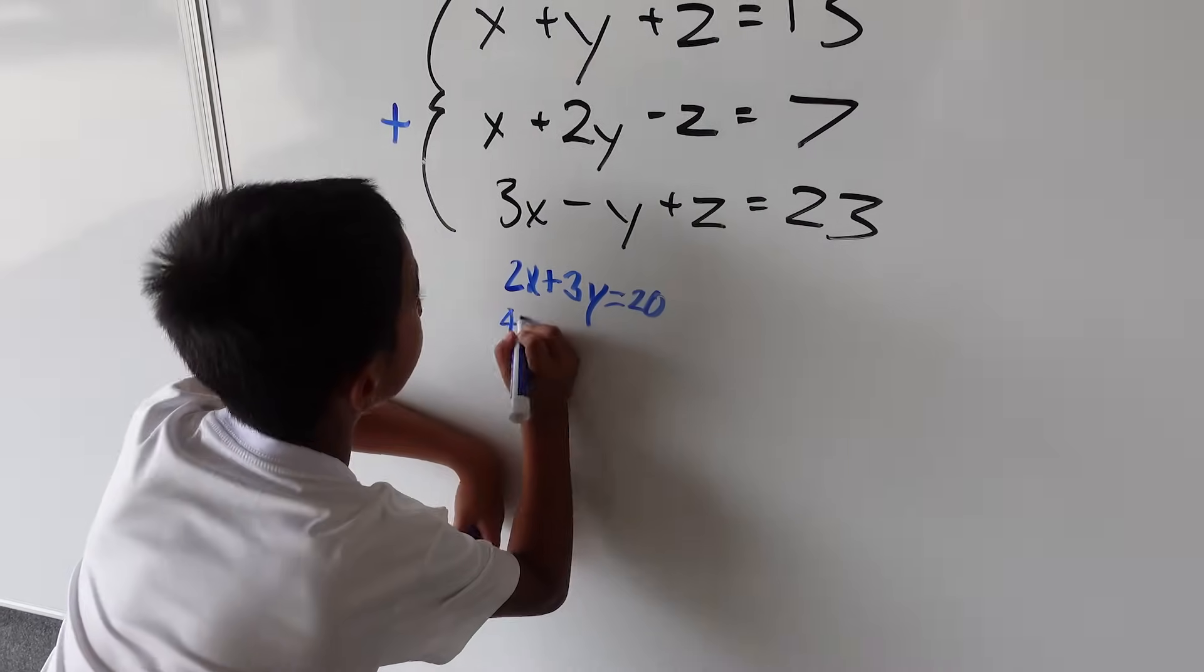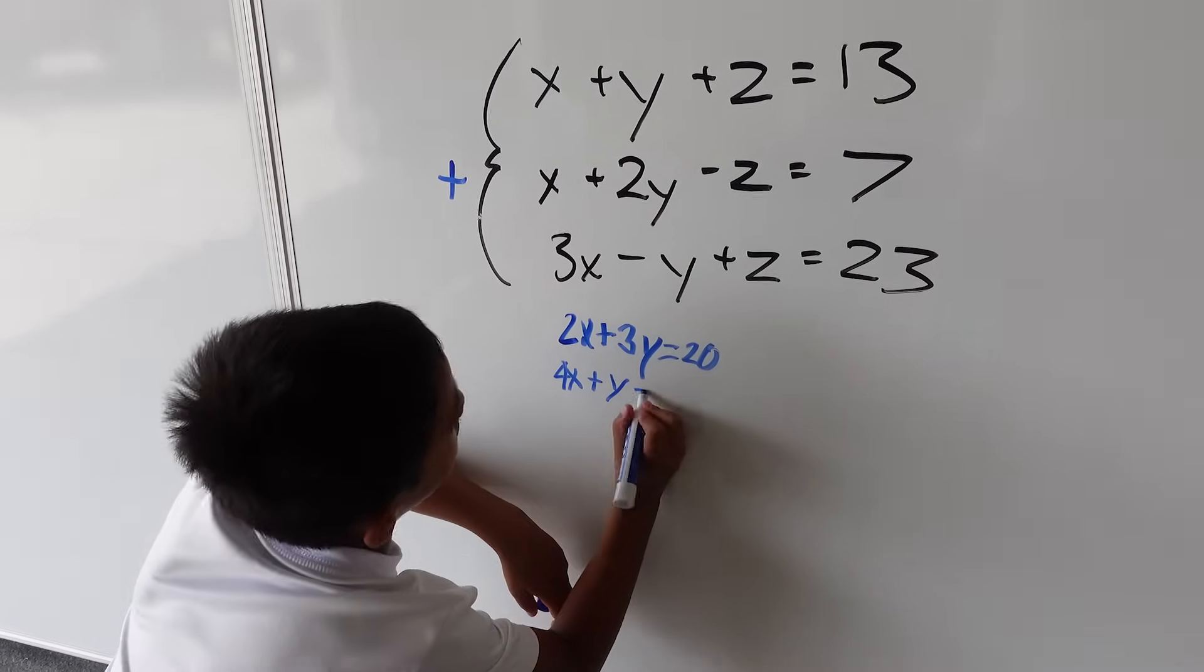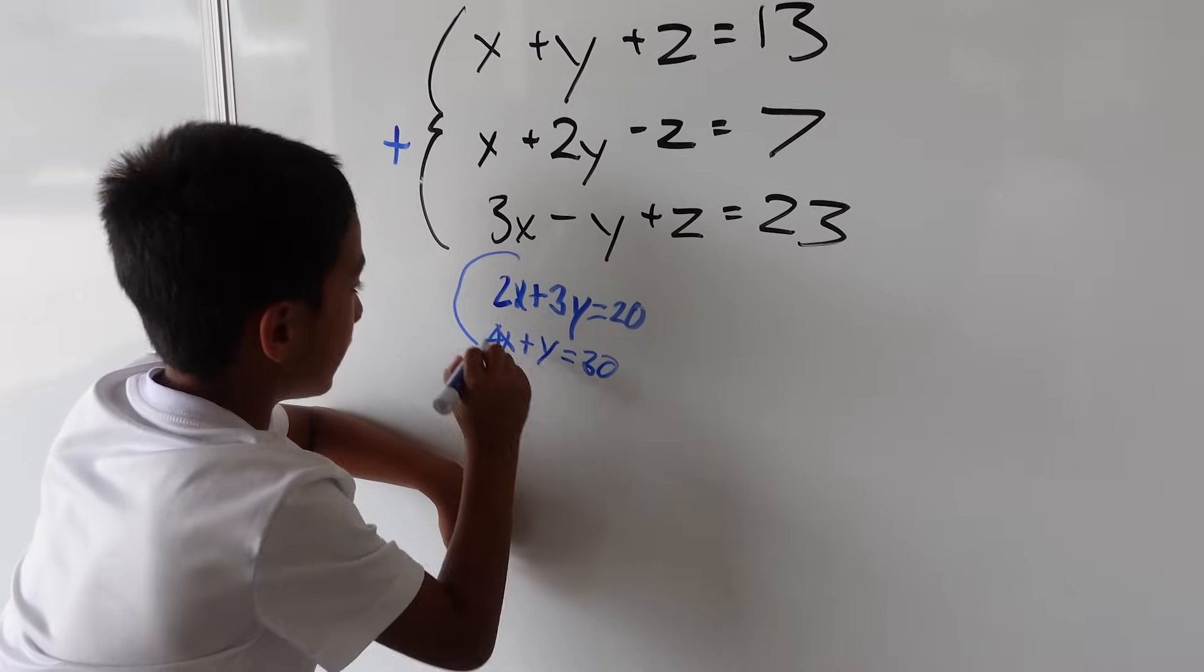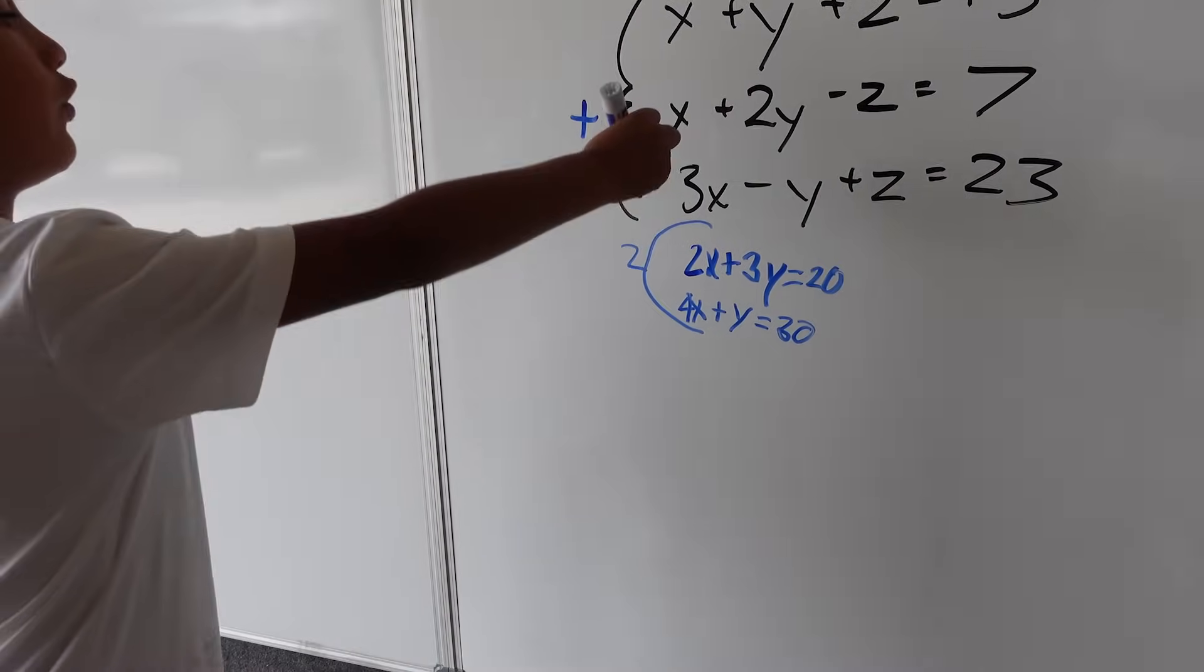You have 4x plus y equals 30. You need to use parentheses, then you have to multiply by 2, because you want these to match so you can cross those out and eliminate the x to solve for y.